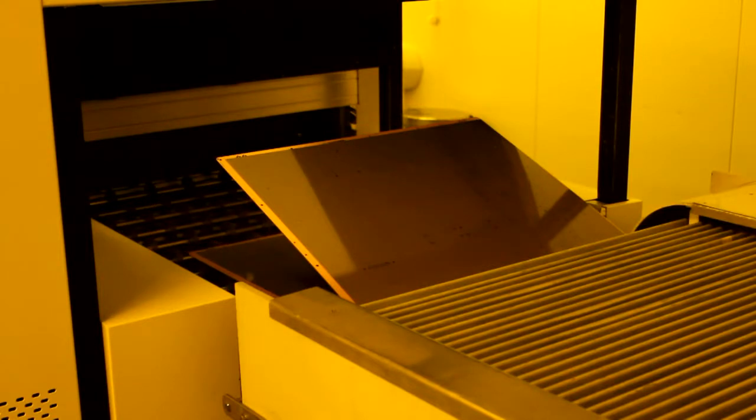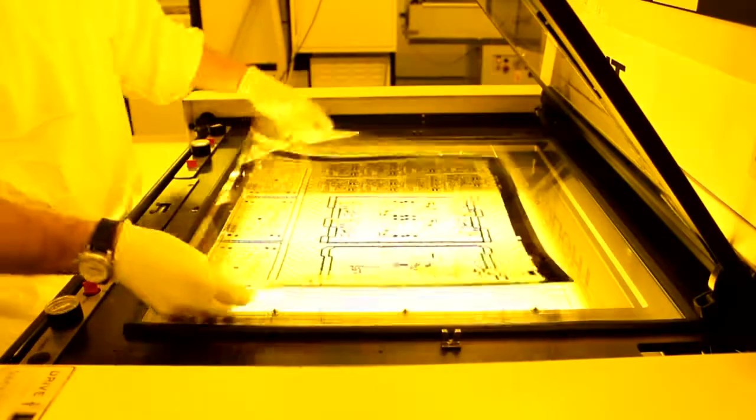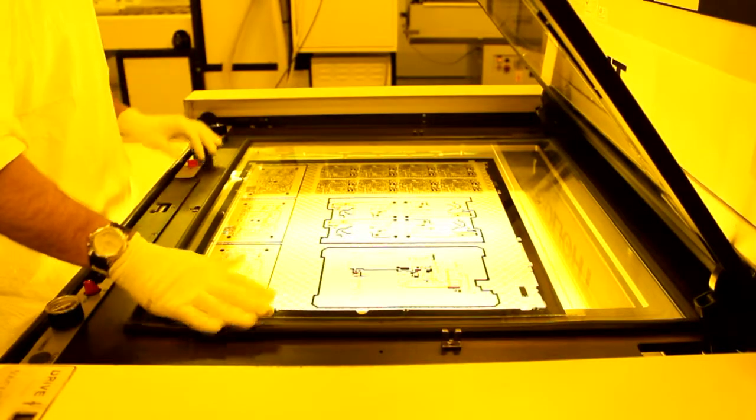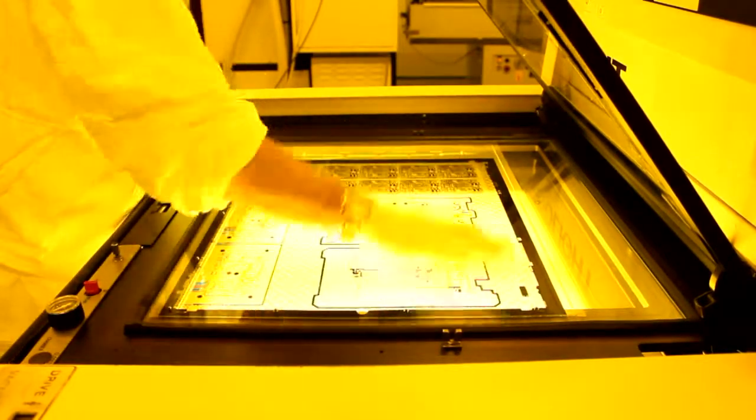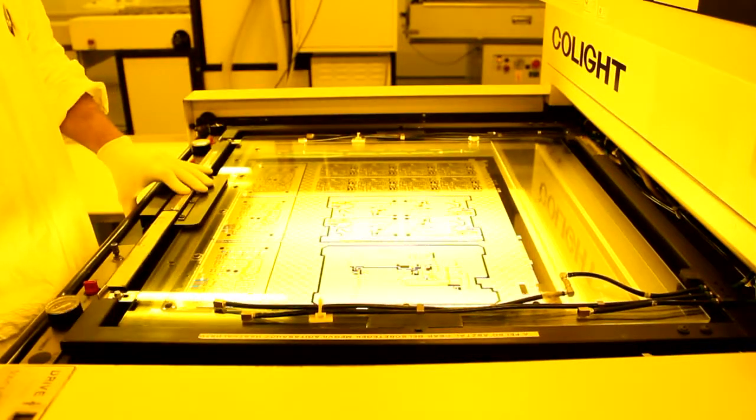The bed of the printer has registration pins matching the holes to the photo tools and the panel. The operator loads the first film onto the pins, then the laminated panel and finally the second film. The pins ensure that the top and bottom layers are precisely aligned.